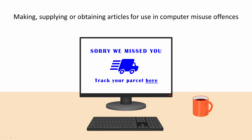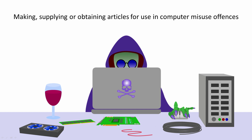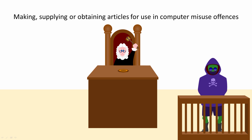But the law doesn't stop at software. You can imagine someone could create, supply, or obtain computer hardware for criminal purposes — for example, to automate brute force hacking, phishing attacks, or to mine cryptocurrency using stolen electricity. If found guilty under this section of the Computer Misuse Act, then, depending on the seriousness, an offender can be sent to prison for up to two years, along with a fine.